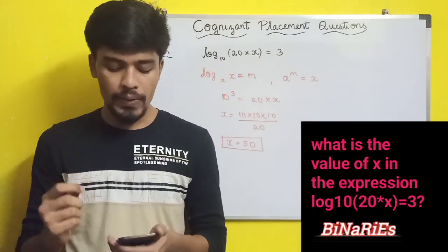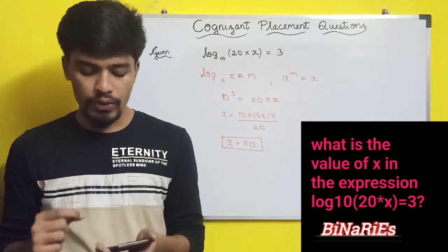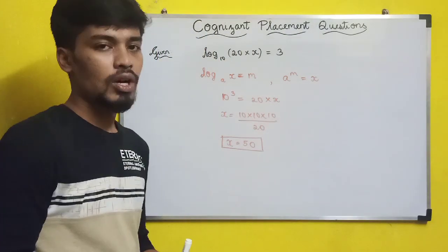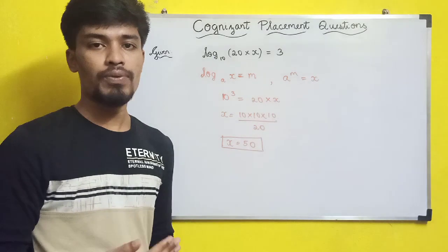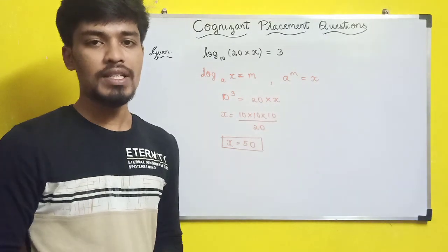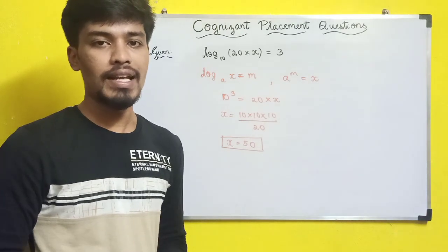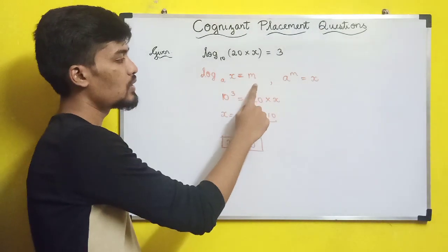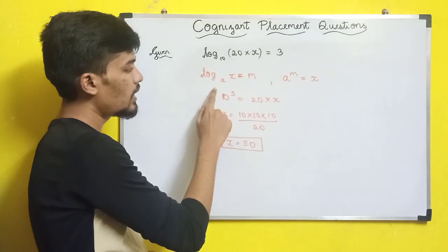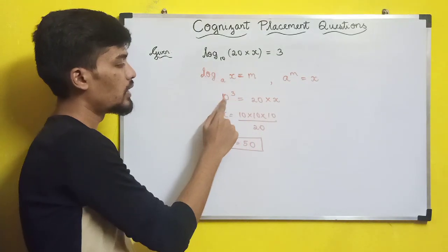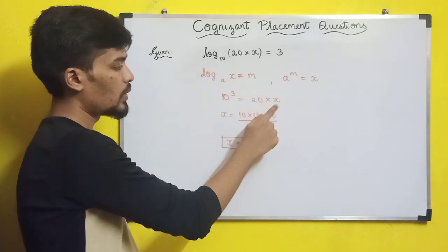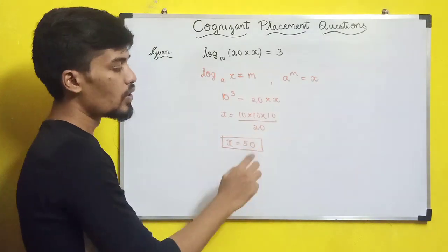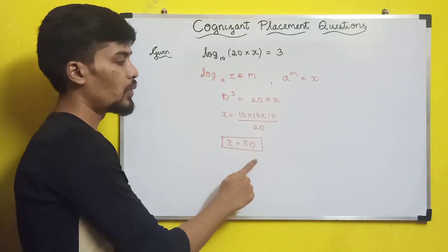Next question: find x if log base 10 of (20 × x) = 3. Using the formula log_a(x) = m means a^m = x, so 10³ = 20x. Therefore 1000 = 20x, so x = 1000/20 = 50.